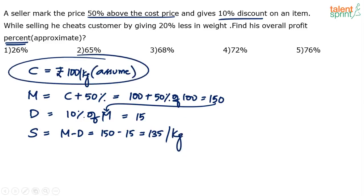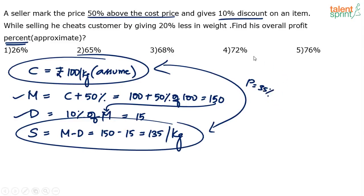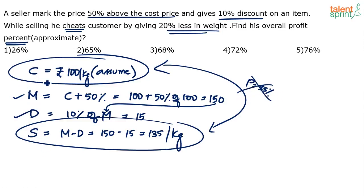We started with the assumption that the cost price is 100 rupees per kg, and we found the selling price is 135 rupees per kg. So here, what has been bought for 100 rupees is being sold for 135 rupees — a profit of 35%. But if the question only asked for profit percentage, the answer would be 35. However, there is one more lever: while selling, he cheats the customer by giving 20% less in weight. So the final answer is not going to be 35.